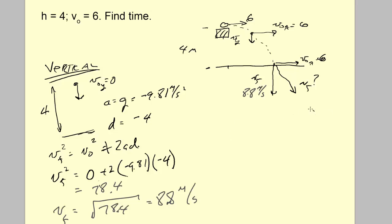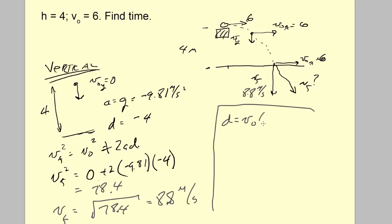What I really wanted was the time. To find time when we know initial velocity, acceleration, and displacement — that could be ugly because we'd need the formula with t² terms. However, our initial vertical velocity is zero, which simplifies things considerably.